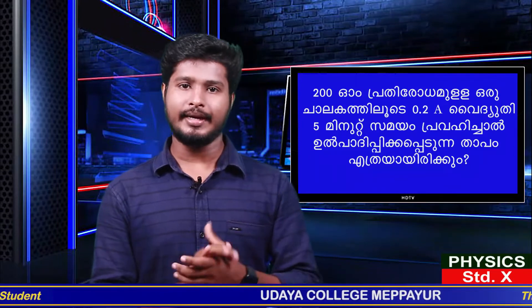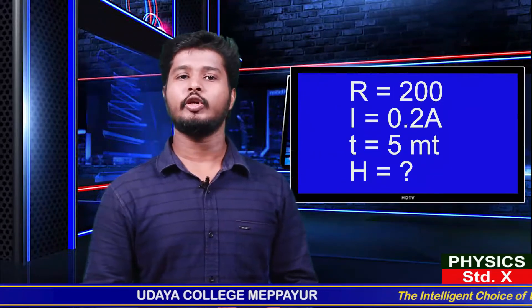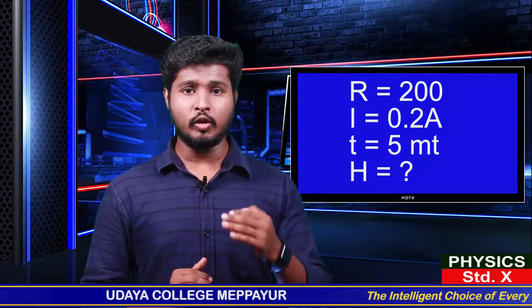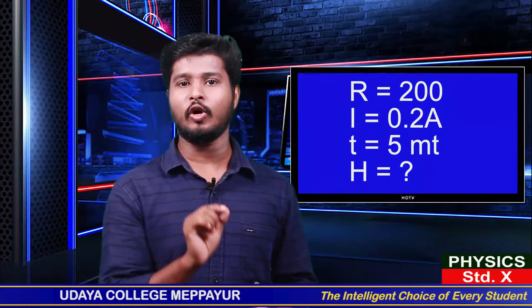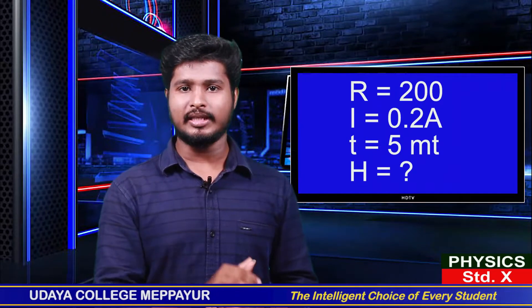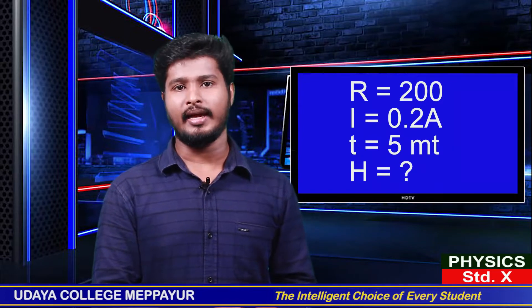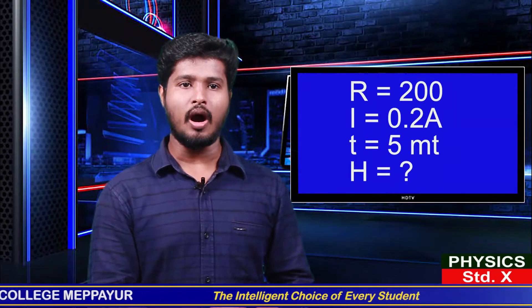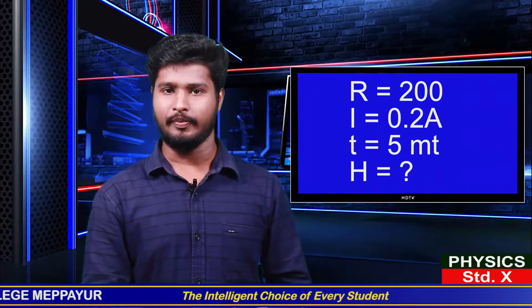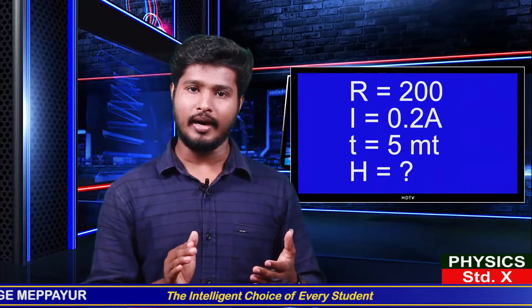When we look at the questions, the things that we need to identify: there are 200 ohms. What do we call that? We call R equal to 200 ohms.